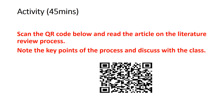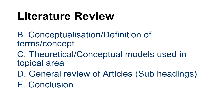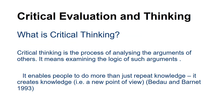When looking at the literature review chapter, the structure includes: (A) introduction — aim of the chapter, definition of literature review, why literature is important in research, and structure of the chapter; (B) conceptualization — definition of terms and concepts, theoretical and conceptual models used in the topical area, general review of articles with subheadings; and then a conclusion.